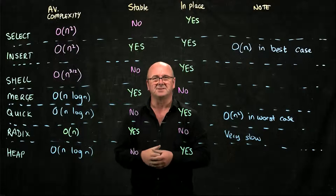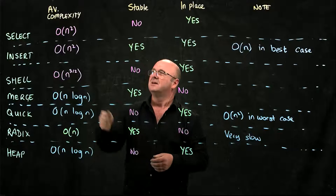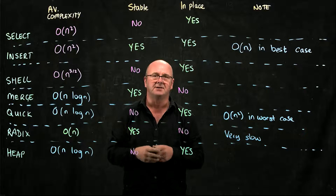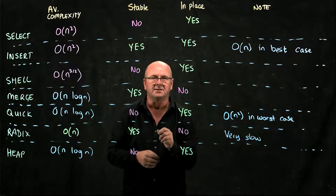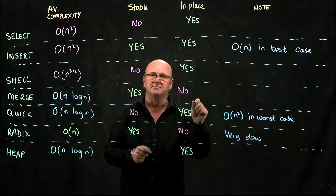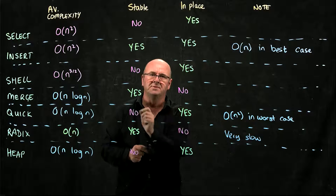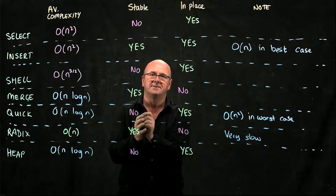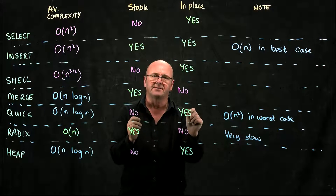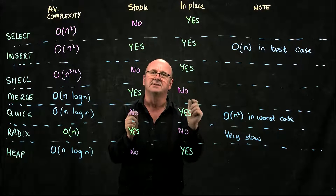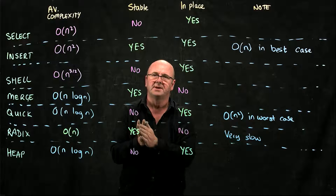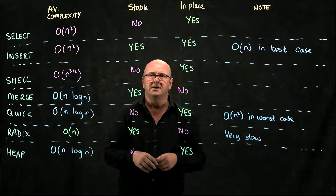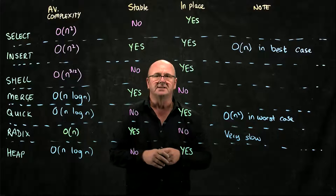Let's go ahead and review the sorts that we've seen in class. We have the selection sort, which has an average complexity of O(n²). In selection sort, you select the smallest thing in the list and move it to the front. Then you go back through the list, select the next smallest, and move it to the front. It's not stable — you can make it stable with some additional coding — but it is an in-place sort.